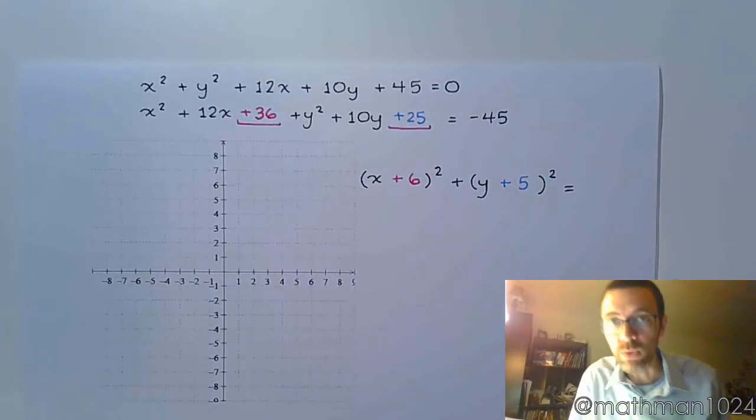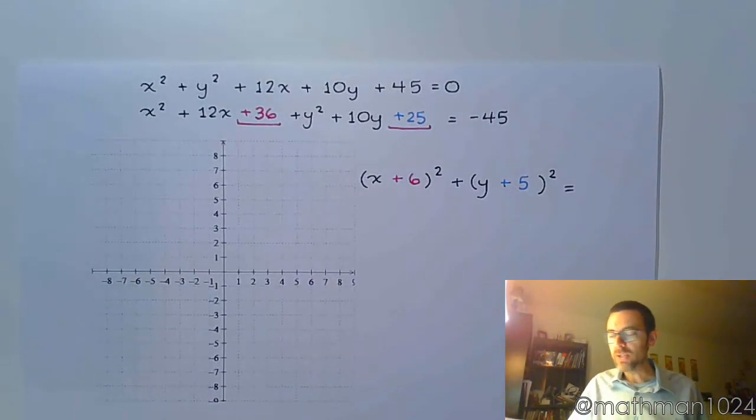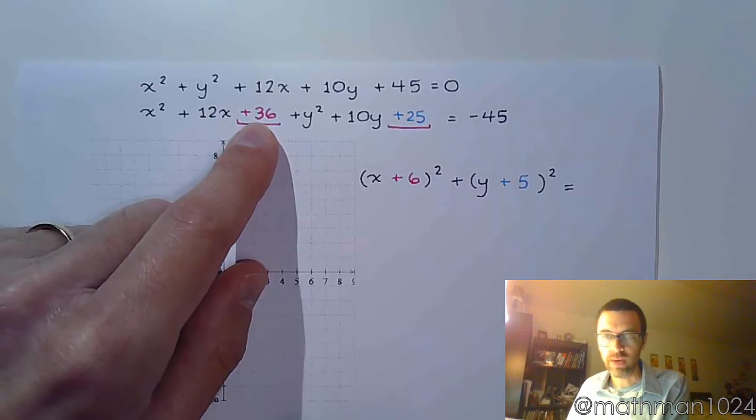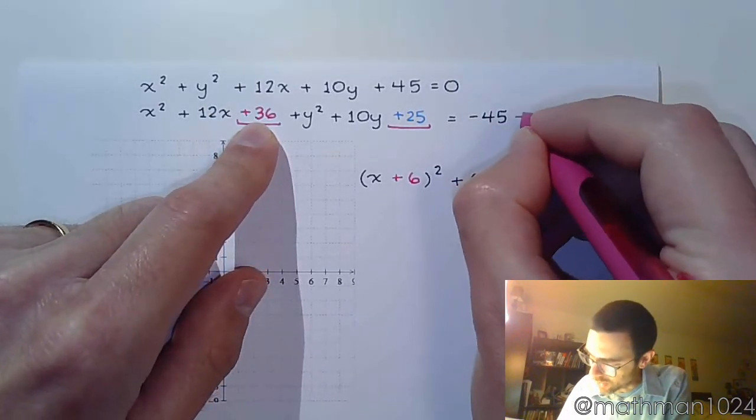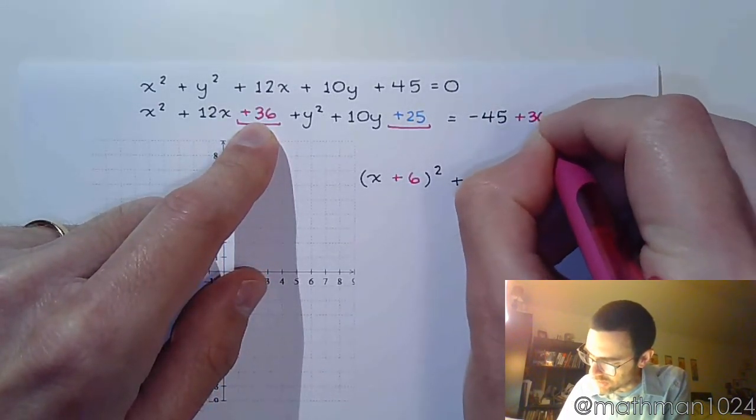But now there's something that we're missing when we're completing the square. I can't just add 36 over here. I must also add 36 to the right side.